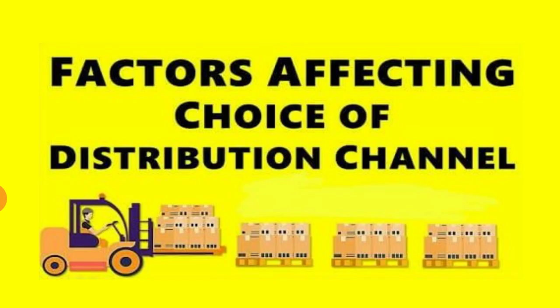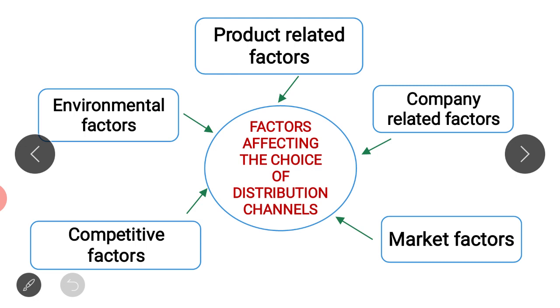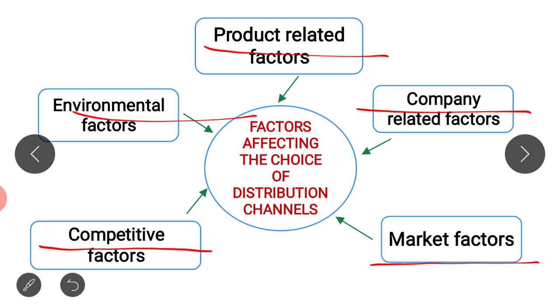In indirect channels there are different intermediaries. Where there is one intermediary we call it a one-level channel, where there are two intermediaries we call it a two-level channel, and where there are three intermediaries — agent, wholesaler, and retailer — we call it a three-level channel. In this video I will teach you what factors affect the choice of distribution channel: product-related factor, company-related factor, market-related factor, competitive-related factor, and environmental factor.